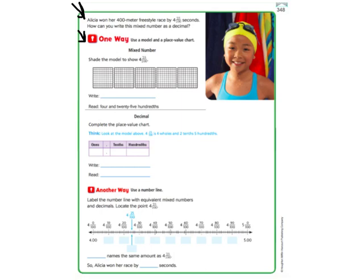So the first way here is our model. So four and twenty-five hundredths. So that means four wholes that we are going to color in, four whole hundredths, and twenty-five hundredths. So ten, twenty, and then five of those little ones. It's hard to see on my picture, I know, but you would color in twenty-five little boxes here.